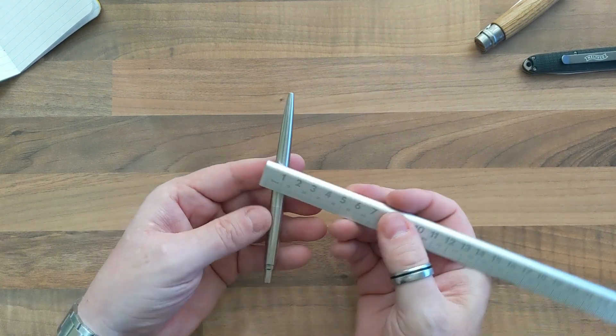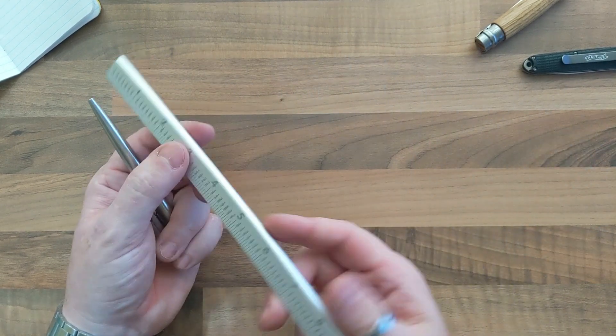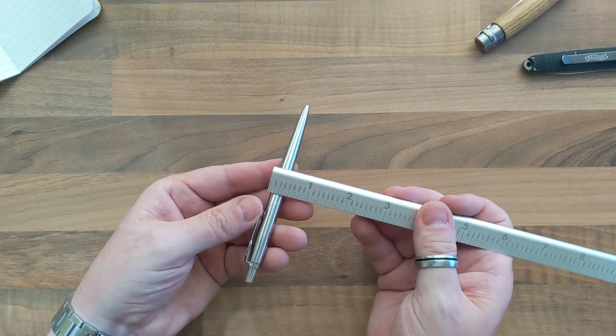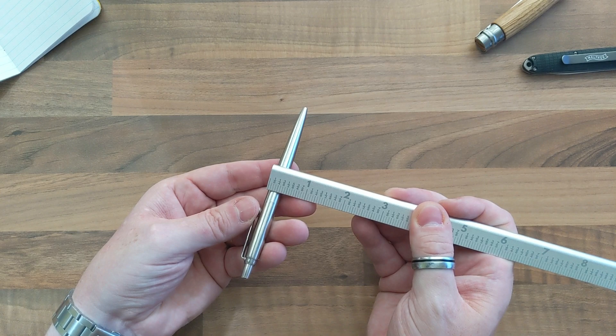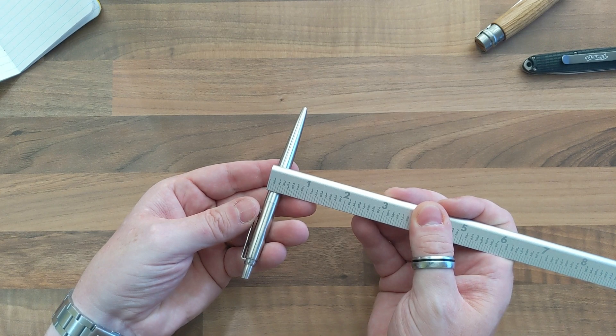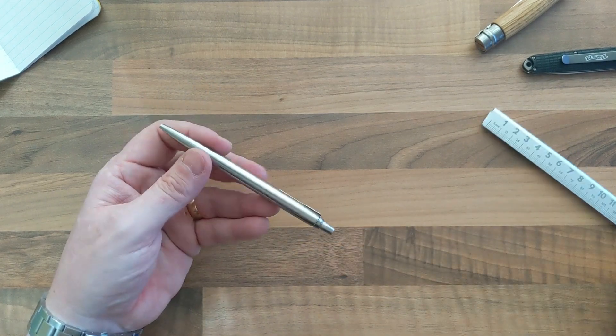The width of the pen at the thickest is 9 millimeters. That in inches is, oh god, that's so hard to see. That's 3 eighths of an inch. Yeah, not the best with inches.